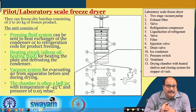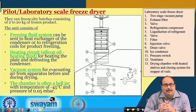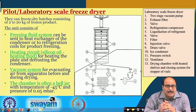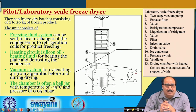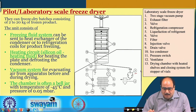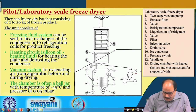The heating circuit normally uses silicon oil heating fluid for heating the plate and defrosting the condenser. It consists of a vacuum system for evacuating air from the apparatus before and during the drying process. The chamber is often a bell jar with a temperature of around minus 45 degrees Celsius and a pressure of about 0.05 mbar.